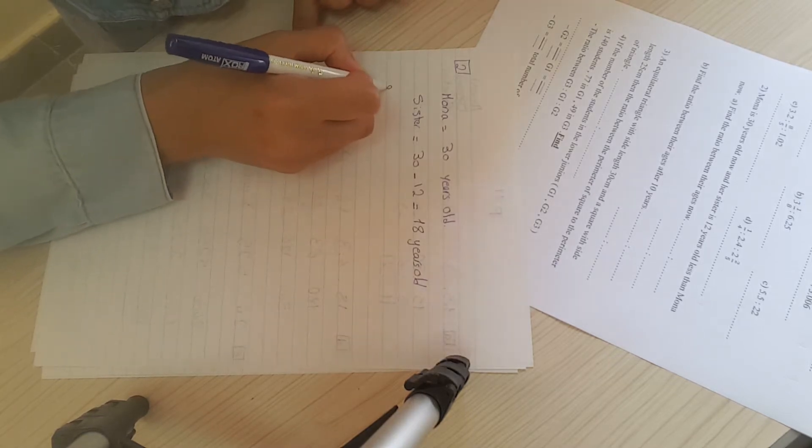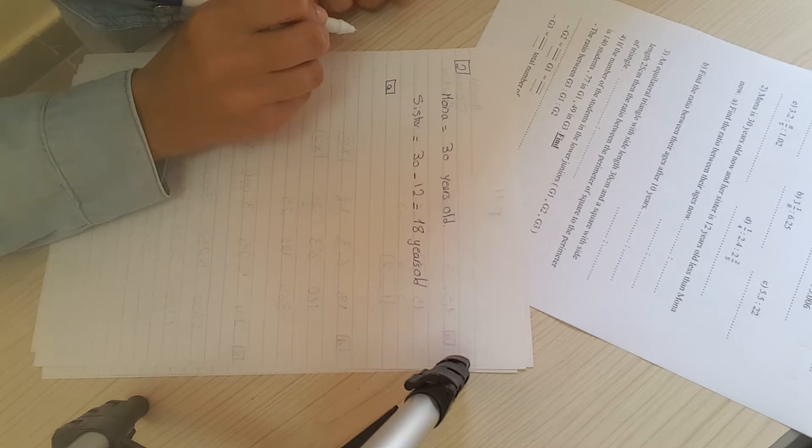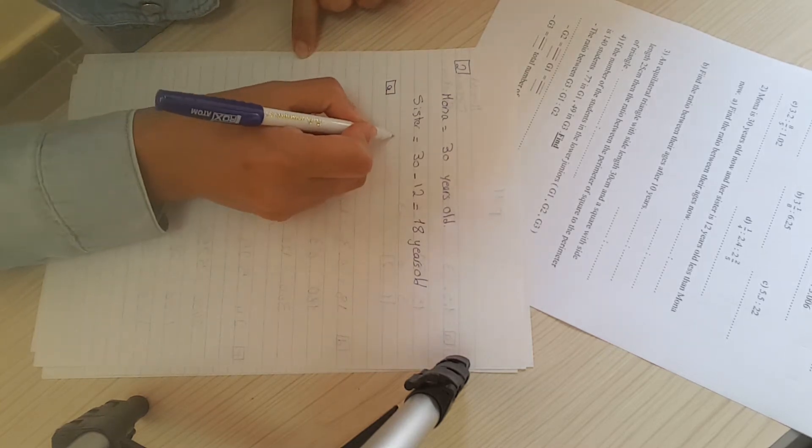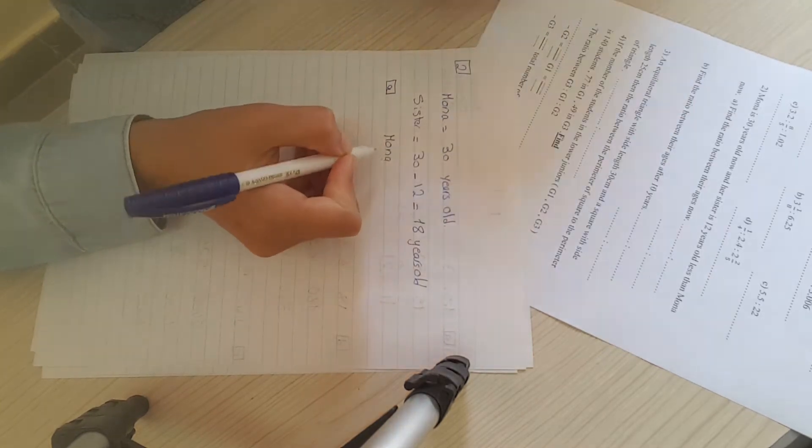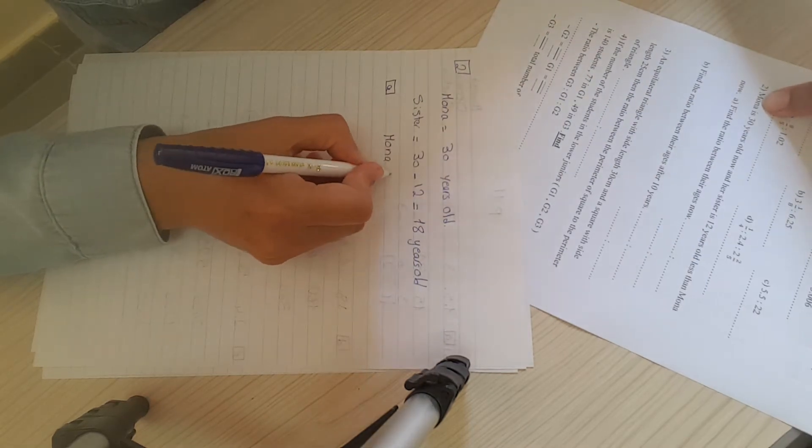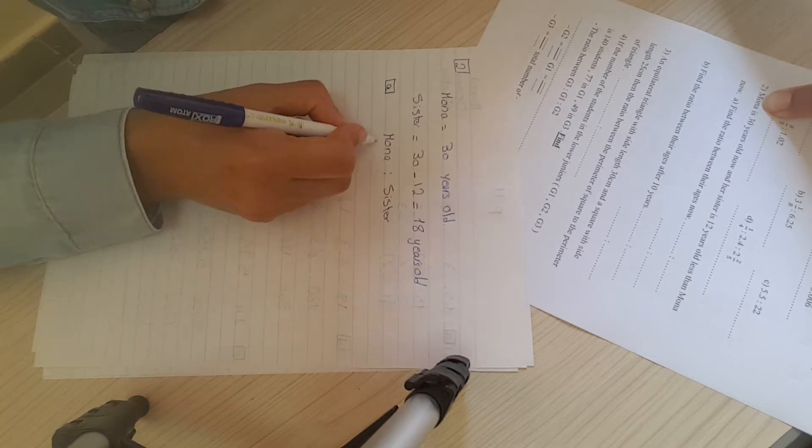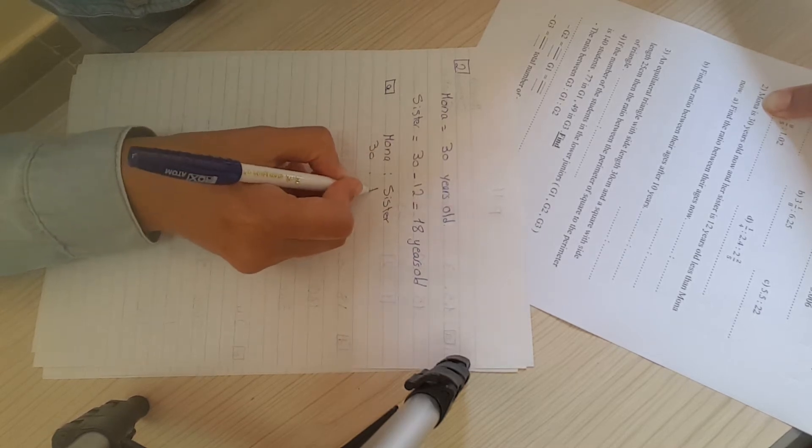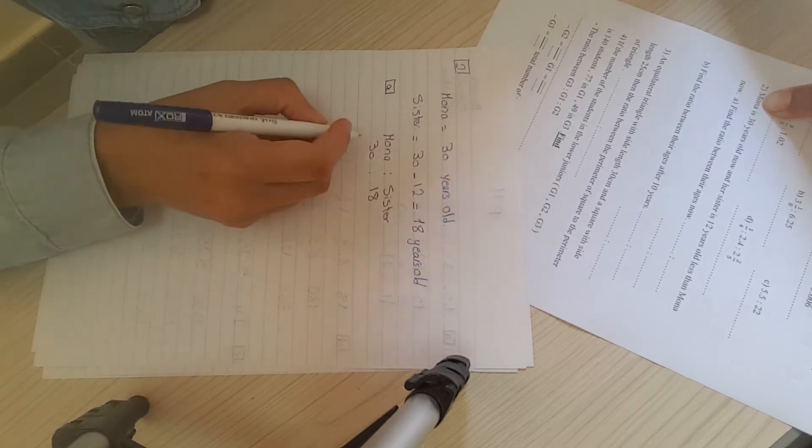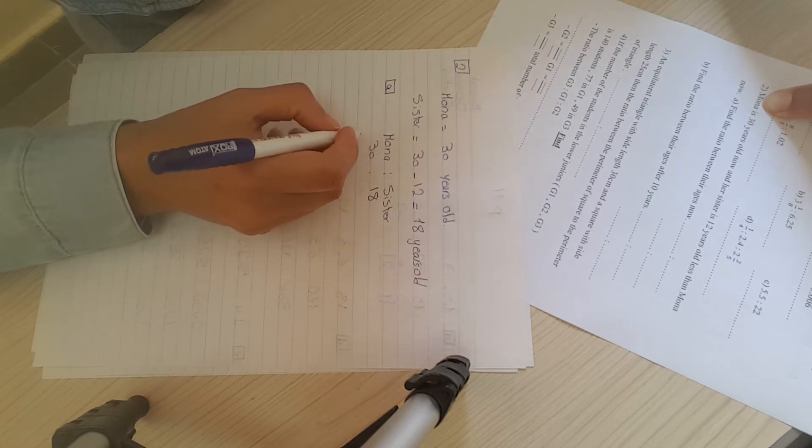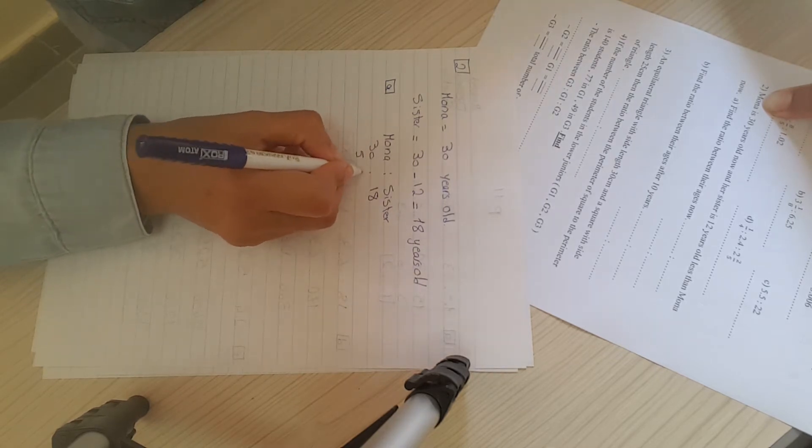The first question: find the ratio between their ages now. So we will make Mona to her sister. Mona is 30, her sister is 18. 30 to 18. In the simplest form, it will be 5 to 3.